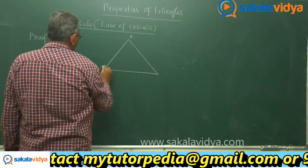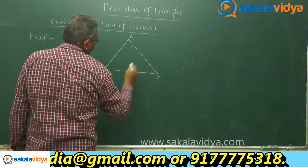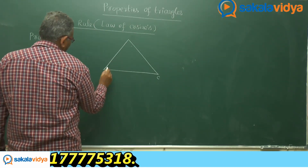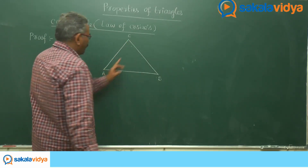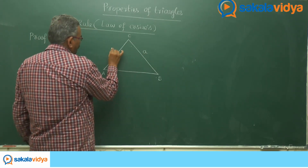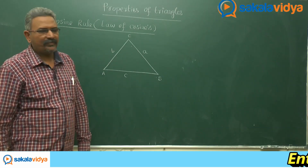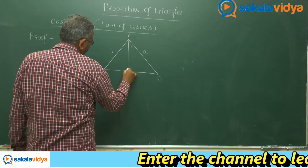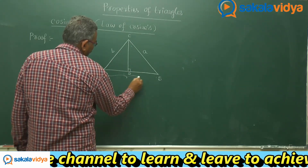Consider triangle ABC, where the side opposite to vertex A is small a. Similarly, the sides opposite to B and C are small b and small c. A, B, C are the vertices and a, b, c are the sides — these are the elements of the triangle. Now draw a perpendicular from C onto side AB, and call the foot D.